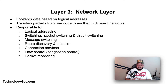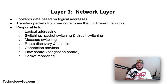Layer three is the Network Layer. The network layer is primarily concerned with forwarding data based on logical addresses. It provides the functionality and procedural means of transferring packets from one node to another connected in different networks. A network is a medium to which many nodes can be connected, on which every node has an address, and which permits nodes to transfer messages to other nodes by providing the content of a message and the destination address, letting the network find the way to deliver it — possibly routing it through intermediate nodes.